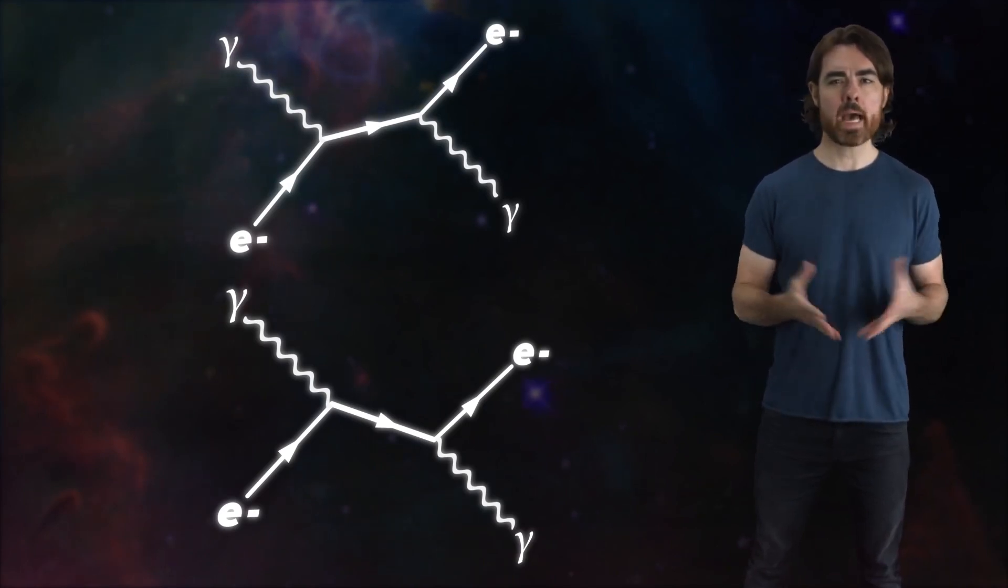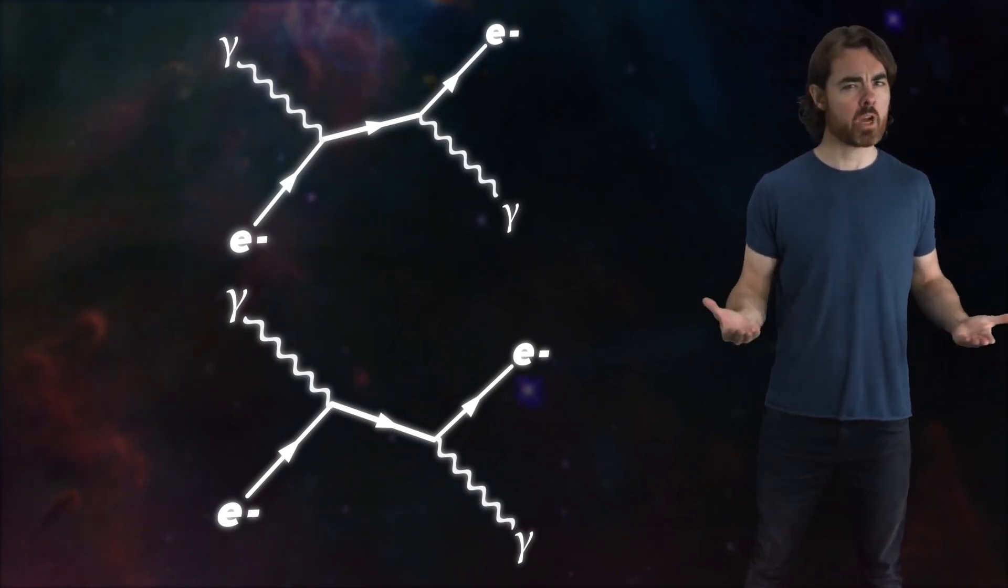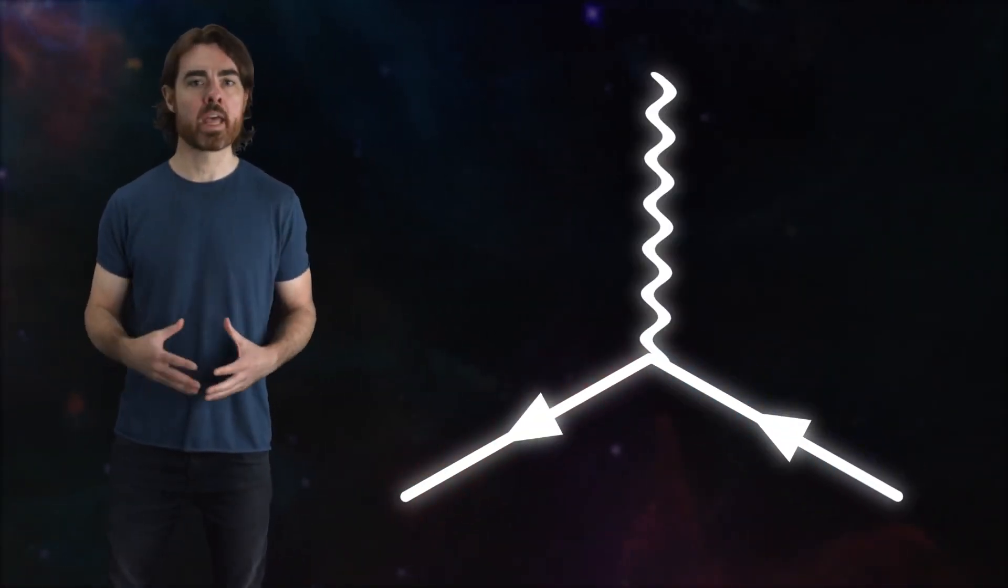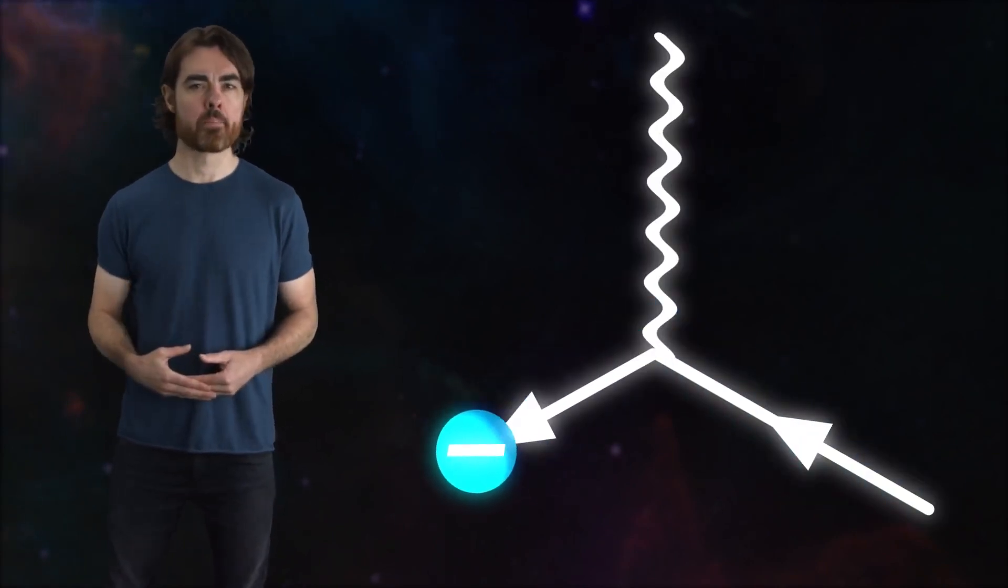So how does this work with Wheeler's one-electron hypothesis? We can think of the annihilation of an electron and positron as just the electron being deflected back in time. Similarly, the creation of a particle pair is the electron being scattered forward in time.